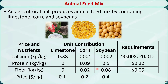Each kg of the final product must contain at least 0.008 kg but no more than 0.012 kg of calcium, at least 0.22 kg of protein, and at most 0.05 kg of fiber.